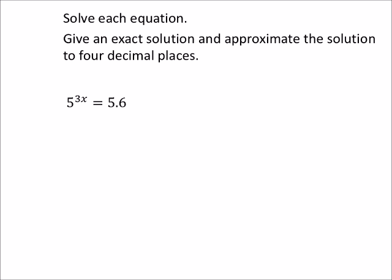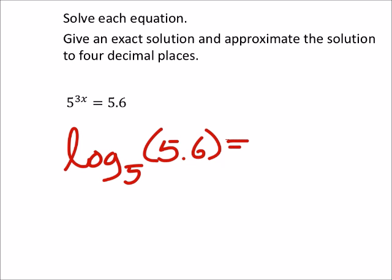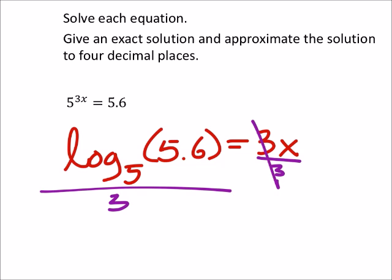So that would be the log - it's a base 5 - and it's of the answer which was 5.6 is going to equal the exponent which was 3x right there. Now the difference on these ones is before it would just equal x. Now what we're going to do though is since x has a coefficient, we're going to have to divide both sides by 3. You cancel out those threes.